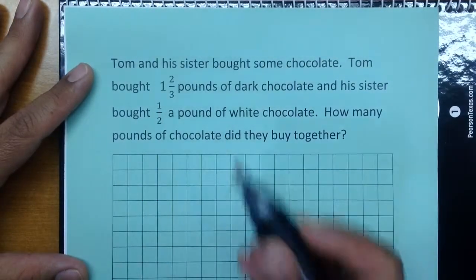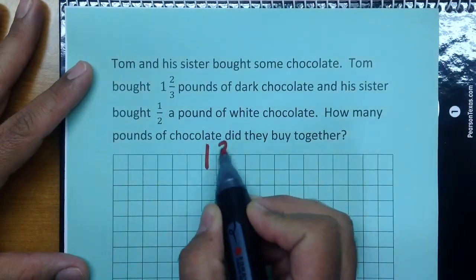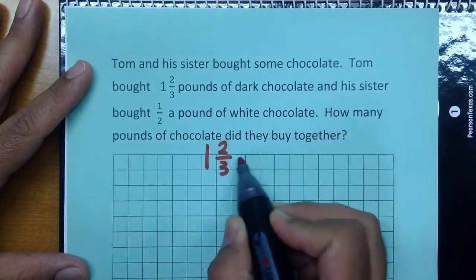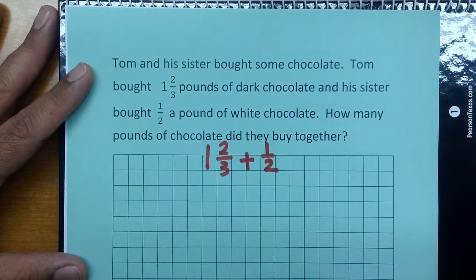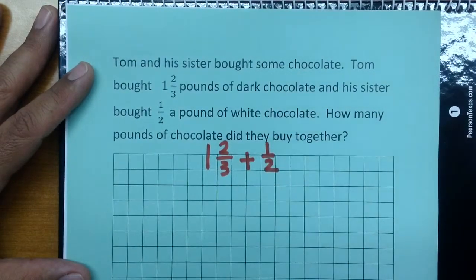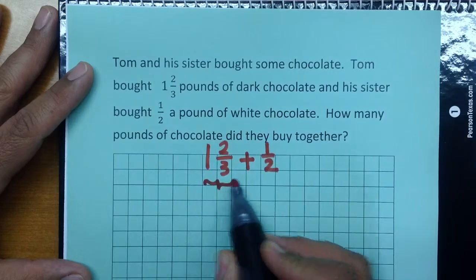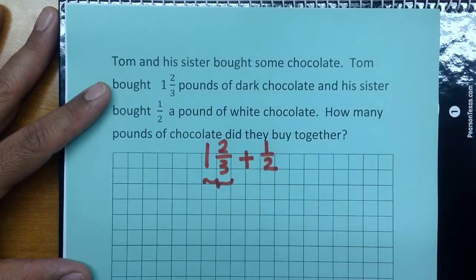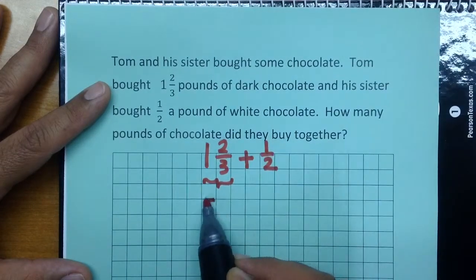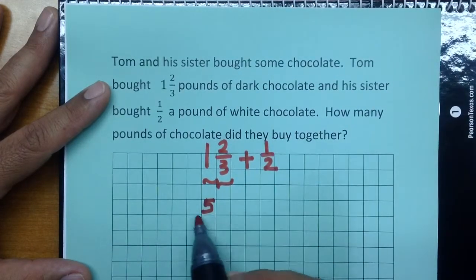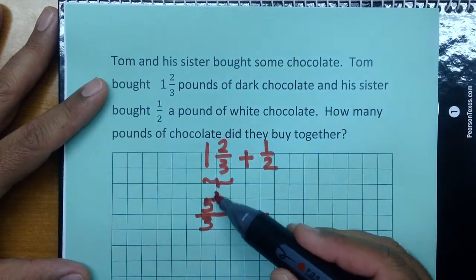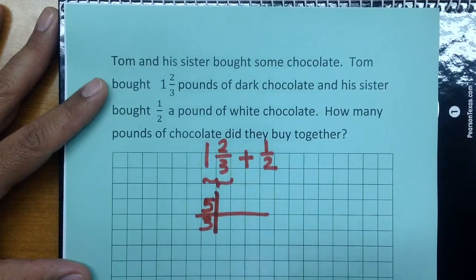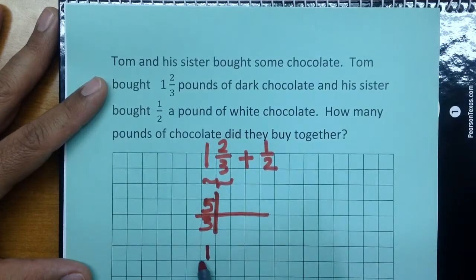This is an addition problem. We have one and two-thirds plus one-half. In order to use a ratio table, we must have our mixed fraction changed into an improper fraction. The improper fraction for one and two-thirds is five-thirds. One-half is already in the form that we need, so we're going to leave it alone.